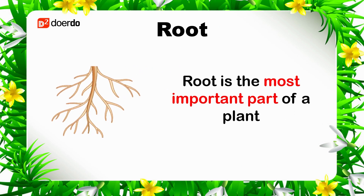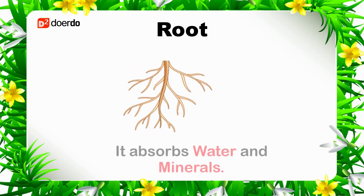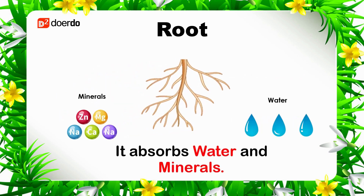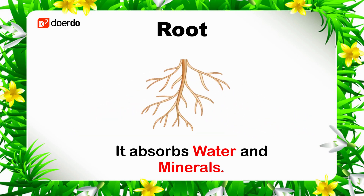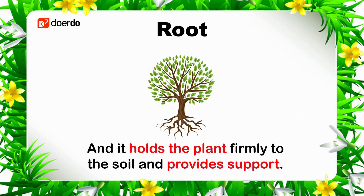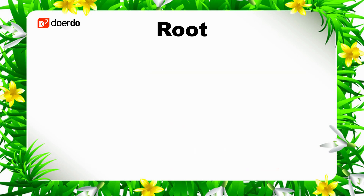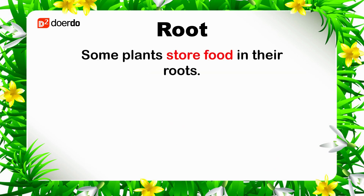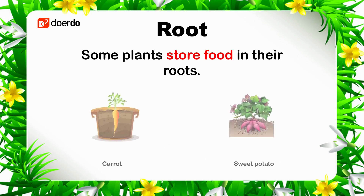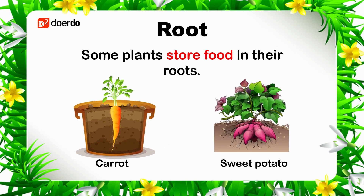The root is the most important part of a plant. It absorbs water and minerals, and it holds the plant firmly to the soil and provides support. Some plants store food in their roots. Examples of plants that store food in their roots are carrots and sweet potatoes.